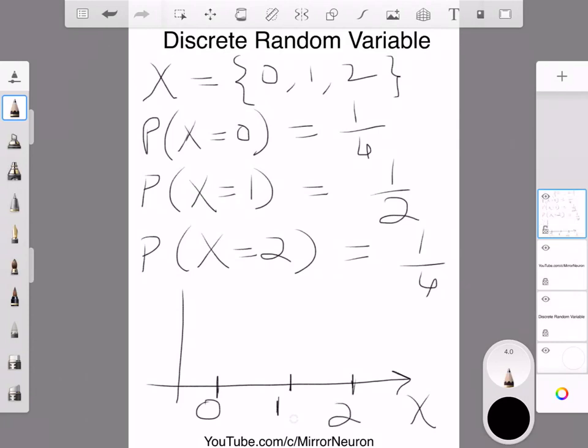So what is the probability of getting 0 heads is 1 by 4. So I can also do something like this: 0.2, 0.4, 0.6.